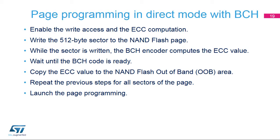To program a page in direct mode, enable the right access and the ECC computation. Write the 512-byte sector to the NAND Flash page. While the sector is written, the BCH encoder computes the ECC value. Wait until the BCH code is ready. Copy the ECC value to the NAND Flash out-of-band, or OOB, area. Repeat the previous steps for all sectors of the page and launch the page programming.